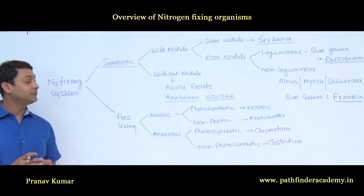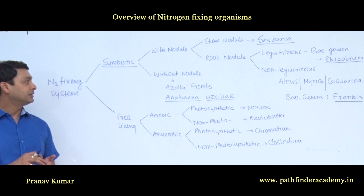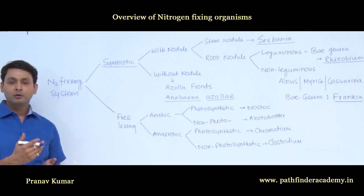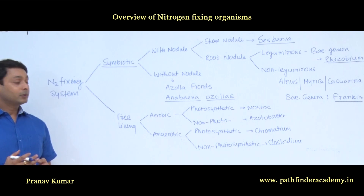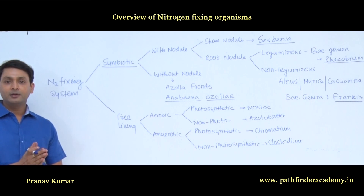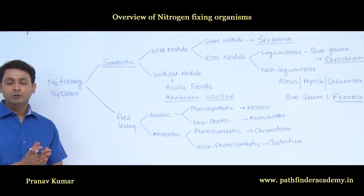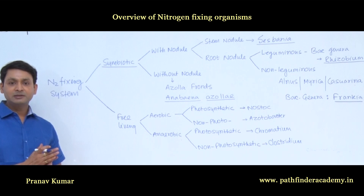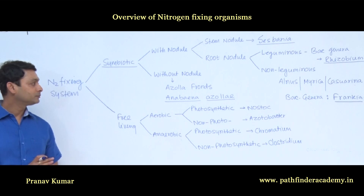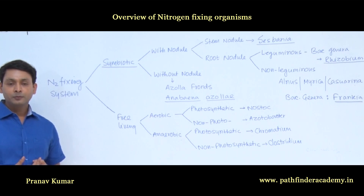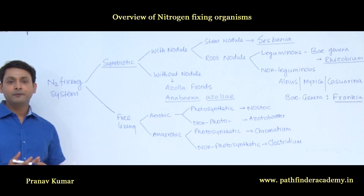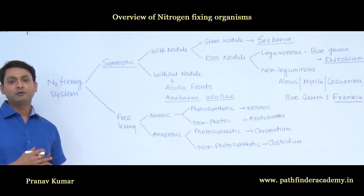In the symbiotic nitrogen fixing system, during the symbiotic association, the nitrogen-fixing bacteria may form nodules or may not form nodules. If the nitrogen-fixing bacteria do not form nodules, this condition is not very common. However, a few examples are available, like Anabaena azollae, which is a blue-green algae that makes a symbiotic association with Azolla fern leaves and performs nitrogen fixation.